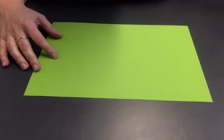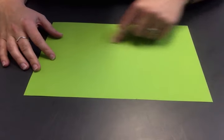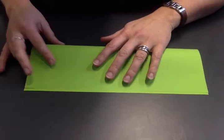To make the modules needed for a tetrahedron, we start with an A-sized piece of paper and fold it in half.